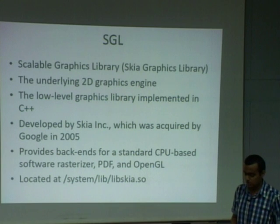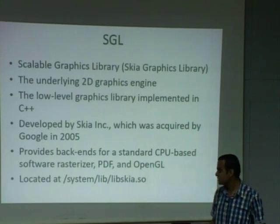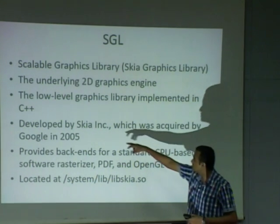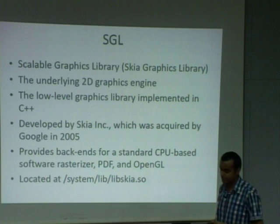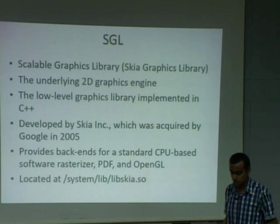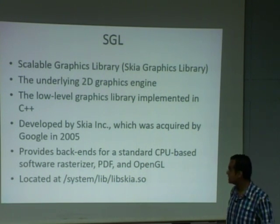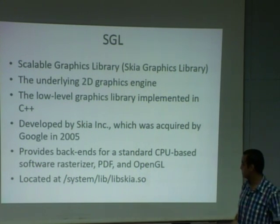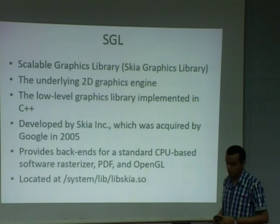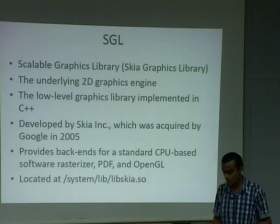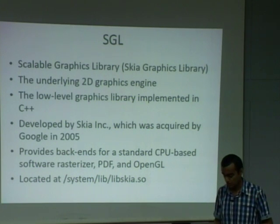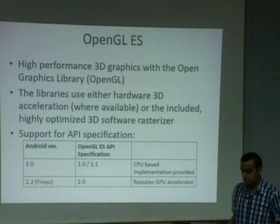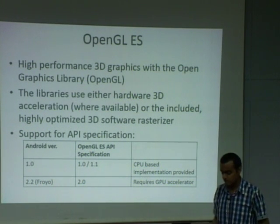Next is SGL, which stands for Scalable Graphics Library or Skia Graphics Library. Skia is the name of the company that developed this library, which was later acquired by Google in 2005. It is a 2D graphics engine written in C++. It provides the back end for CPU-based rasterization, rendering PDFs, and OpenGL. It is located at libskia.so.